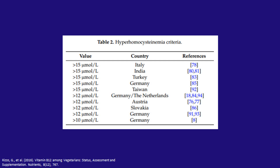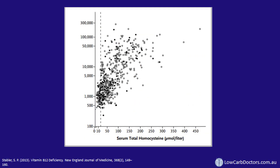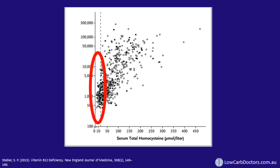Homocysteine elevation can be caused by several factors, not just B12 deficiency, so it's not specific for B12. There's very little consensus on what threshold should be used as a diagnostic cutoff. Data combined from studies over 25 years on patients with clinically determined B12 deficiency shows that many people with confirmed B12 deficiency had homocysteines within the normal range. So homocysteine is not a good test to confirm B12 deficiency — it can still be very normal.